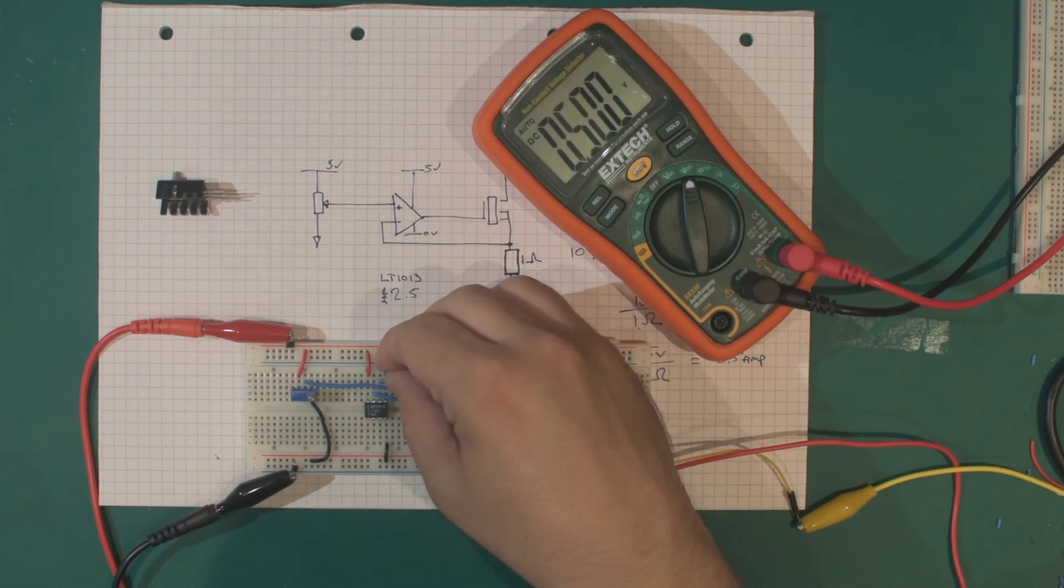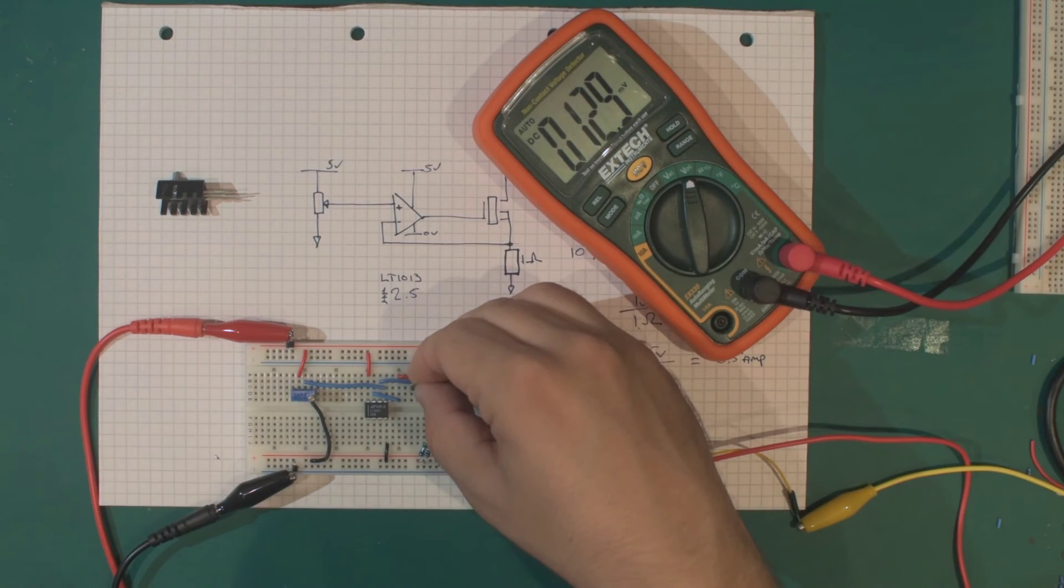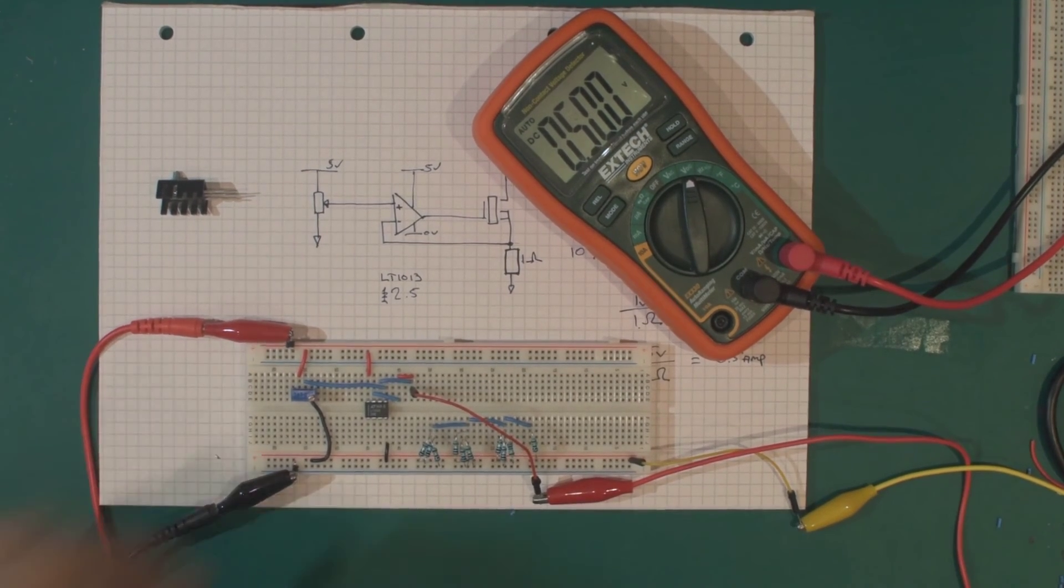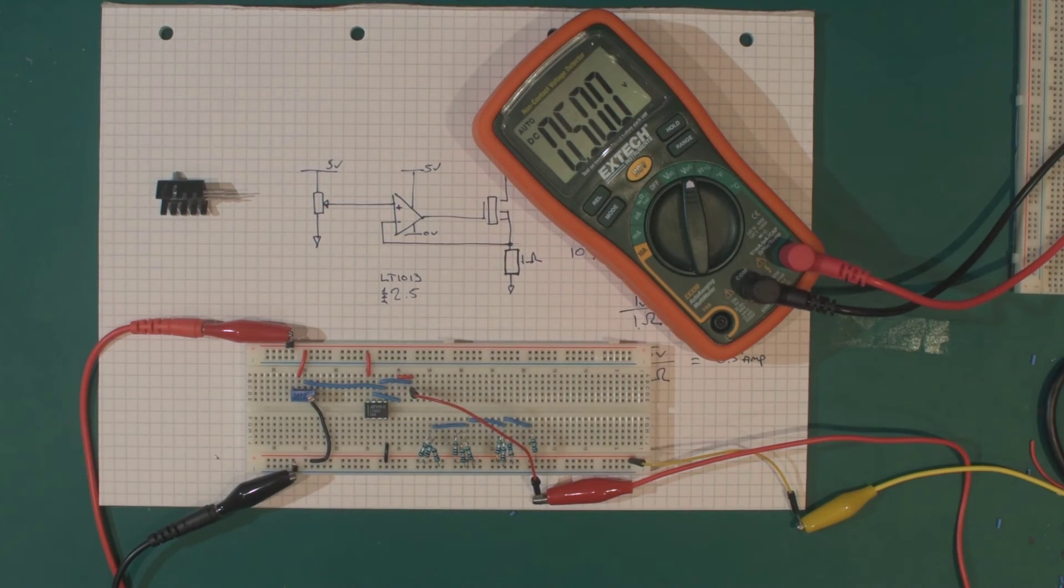If we connect over to the output, I've temporarily got this red jumper in here to replace the MOSFET. We're getting five volts on the output as well. Fantastic. Let's get the MOSFET in and connect it up to a battery, put the meter on it, and see how much we are drawing.